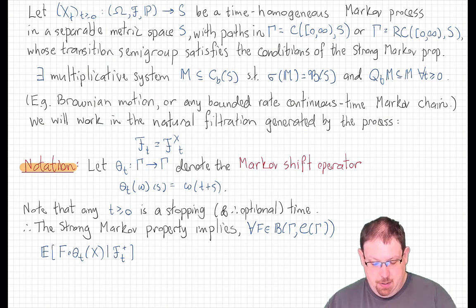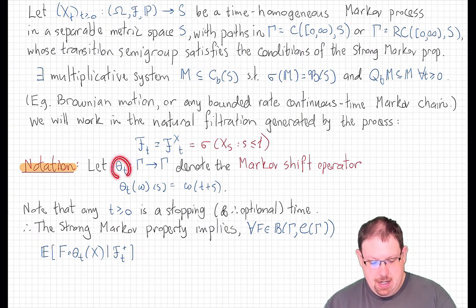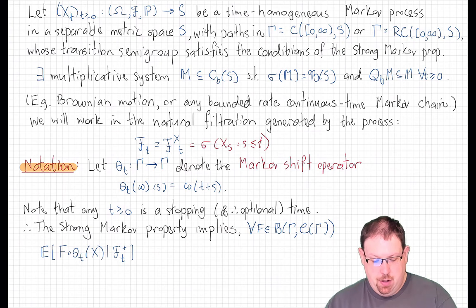we're going to work largely with the natural filtration for the process in the next lecture or two. That is, F_t will always denote the minimal sigma field generated by the process up to time t. And let's introduce some notation here. Theta_t is the Markov shift operator.